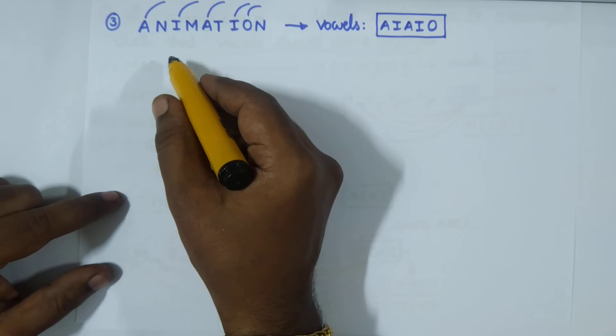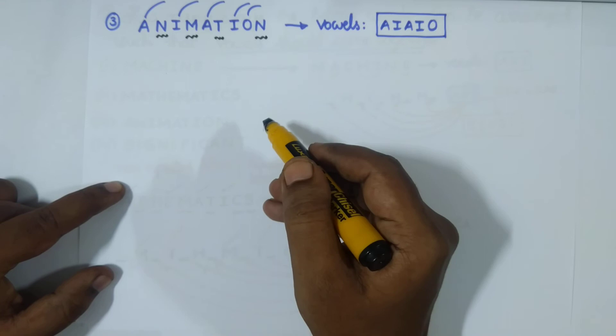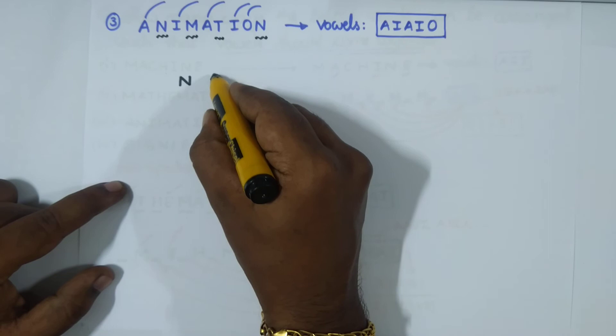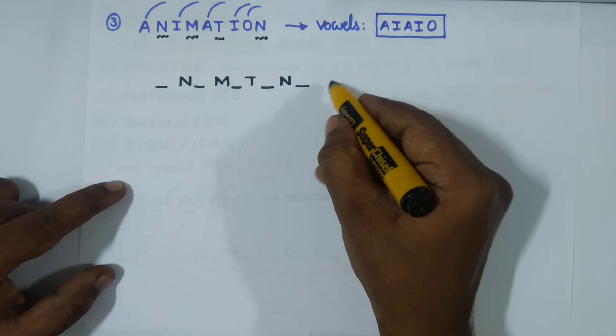After segregating the vowel group, the remaining consonants in ANIMATION are N, M, T, N. With four consonants we get five blanks: one, two, three, four, five.